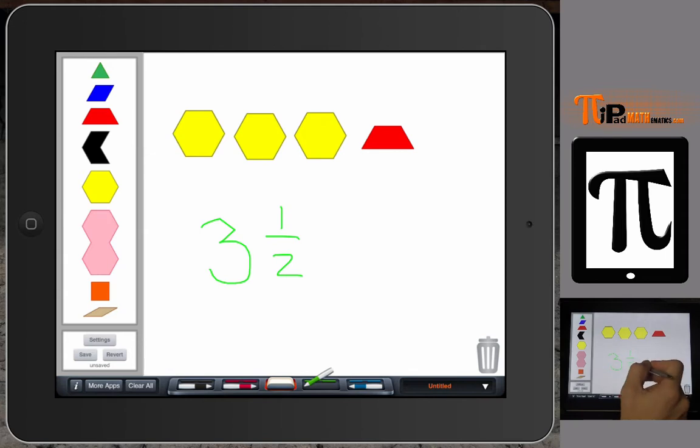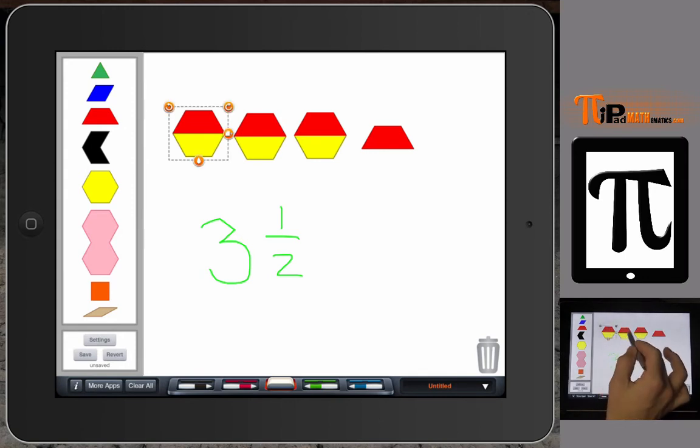But if we looked at it with respect to the denominator of two, or how many halves do we have all together, then we could break each one of these yellow hexagons down into our red trapezoids. We get two red trapezoids here, two there, two here, plus that one. So we get two, four, six, and then seven. So I would have seven halves. So three and one half, three wholes plus a half, equals seven halves.